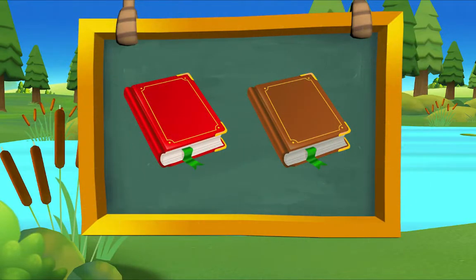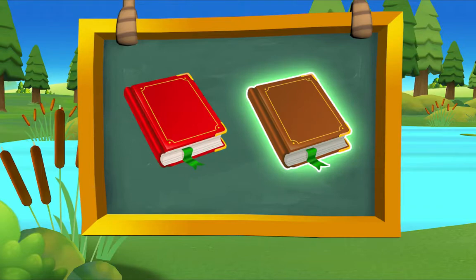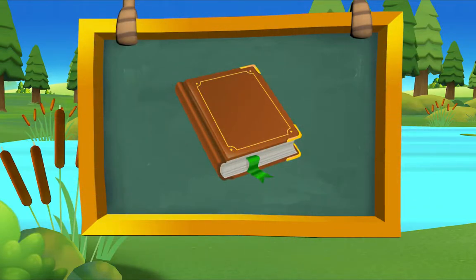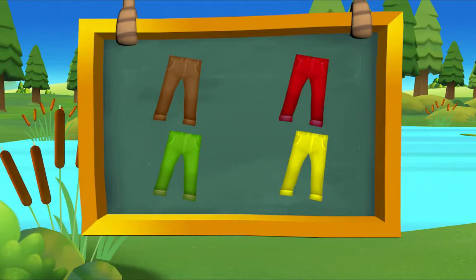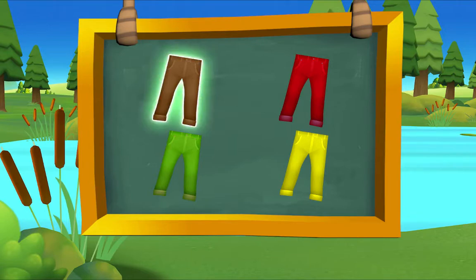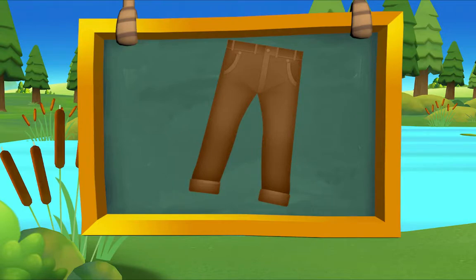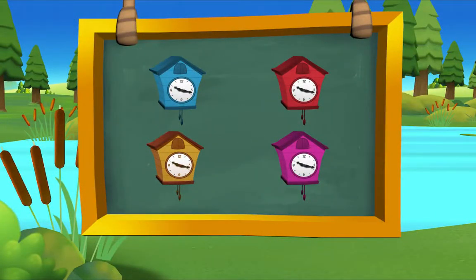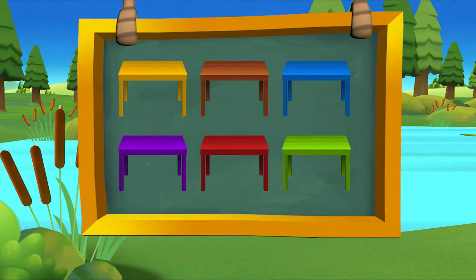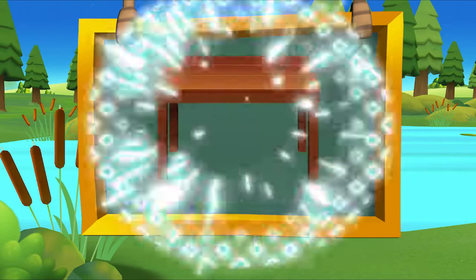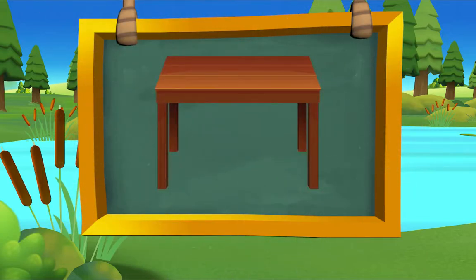Which book is brown? There it is — brown book! Which pants are brown? There it is — brown pants! Which cuckoo clock is brown? There it is — brown cuckoo clock! Which table is brown? There it is — brown table! Marvelous!